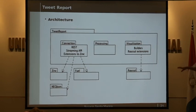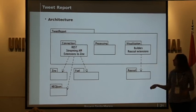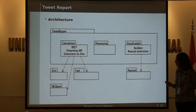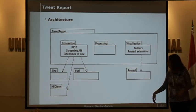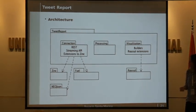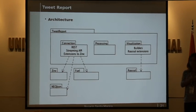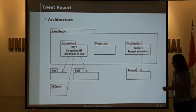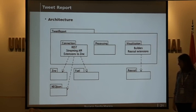To do this, we built a library called TweetReport, which consists of three different models that handle the connection, then the processing, and later the visualization of the different examples. The connection uses Zinc, which is a framework to handle the HTTP protocol, and which we use to make the different requests to REST and streaming. The data from Twitter comes in JSON format, so we have to parse it into a model similar to a Twitter object model, where we have tweets, users, and other data. To persist it, we use Fuel, which is a binary serializer for objects.